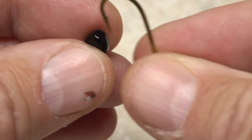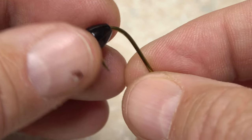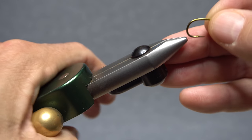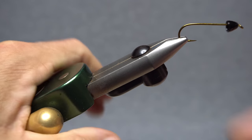Insert the point of the hook into the small hole of the cone, then slip the cone to a round behind the hook eye. Get the assembly firmly secured in the jaws of your tying vise.